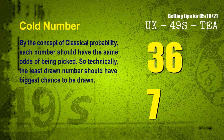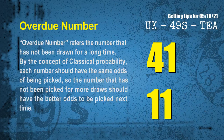In the end of this video, we have two more tips for you: cold numbers and overdue numbers. By the concept of classical probability, each number should have the same odds of being picked, so technically the least drawn number should have the biggest chance to be drawn. The coldest two numbers for next draw are 36 and 07. Overdue numbers are those not drawn for a long time — the most overdue two numbers are 41 and 11.